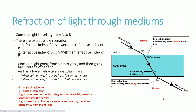Refraction of light through a medium can look complex but it's actually logical. Consider light traveling from medium A to medium B. Looking at this example, there's an incident ray traveling from air into a glass block and then back out into air. You can see the direction of light becomes altered as it enters the glass block. Depending on whether medium B has a lower or higher refractive index than A, the light will behave differently.